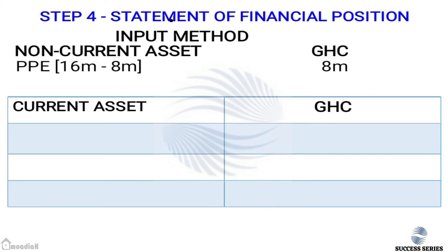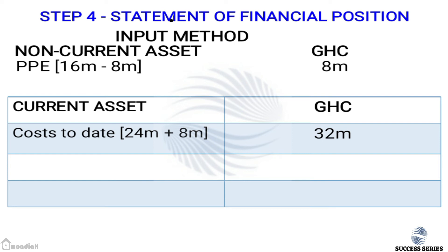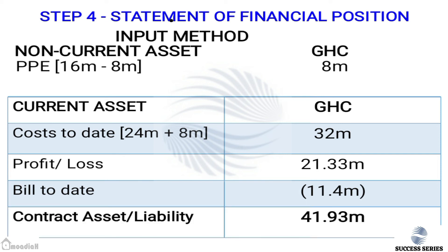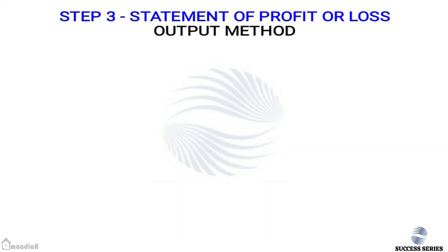Contract asset using the input method: cost to date is 24 million plus 8 million depreciation = 32 million, plus profit of 21.33 million, minus billings to date of 11.4 million. This gives a contract asset of 41.93 million.